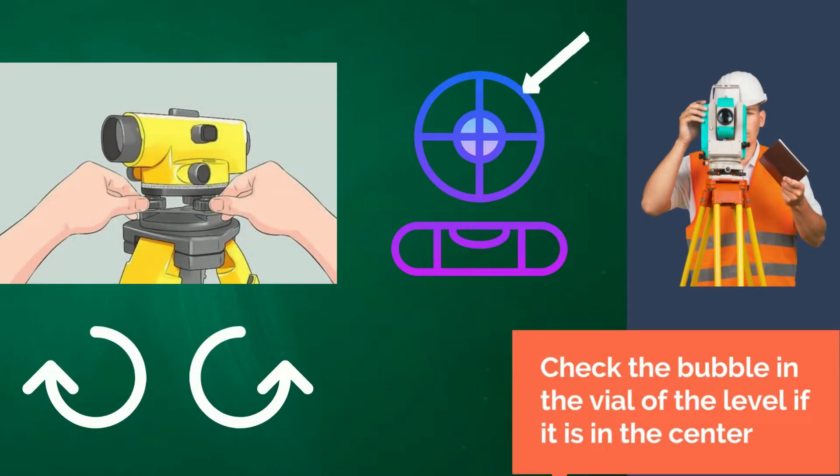In setting up the instrument, check the bubble in the vial of the level if it is in the center. If not, adjust the leveling screws by rotating the screws clockwise or counterclockwise or both in and both out, but never in the same direction.